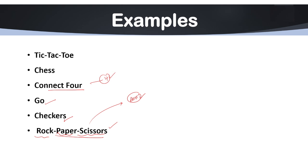Tic-tac-toe is a very simple game that is fully dependent on game tree and is fully analyzed for perfect strategies. Chess and Go are complex games that require heuristics or machine learning to navigate the immense game tree.